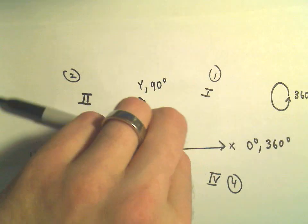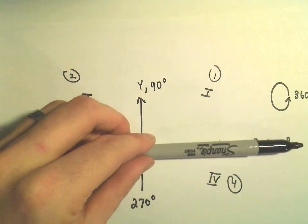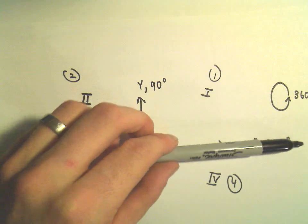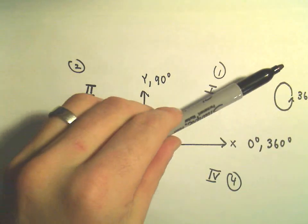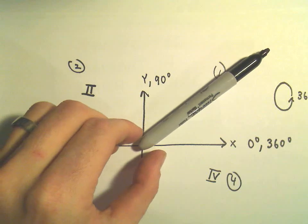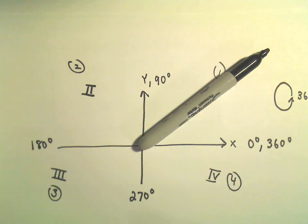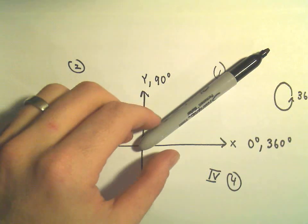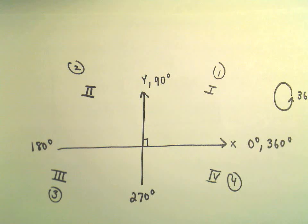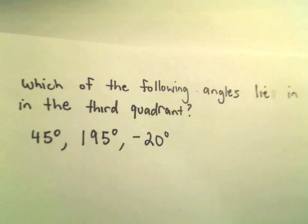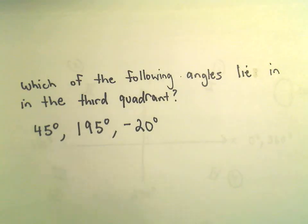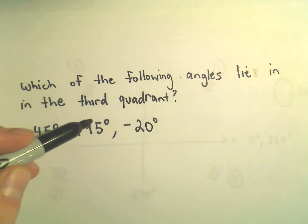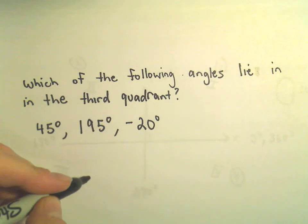Notice if you go all the way around, you're at 360 degrees. There are many different angles that will put you in the exact same place. So let's do a couple basic ones. Which of the following angles lies in the third quadrant? We've got 45 degrees, 195, and negative 20 degrees.